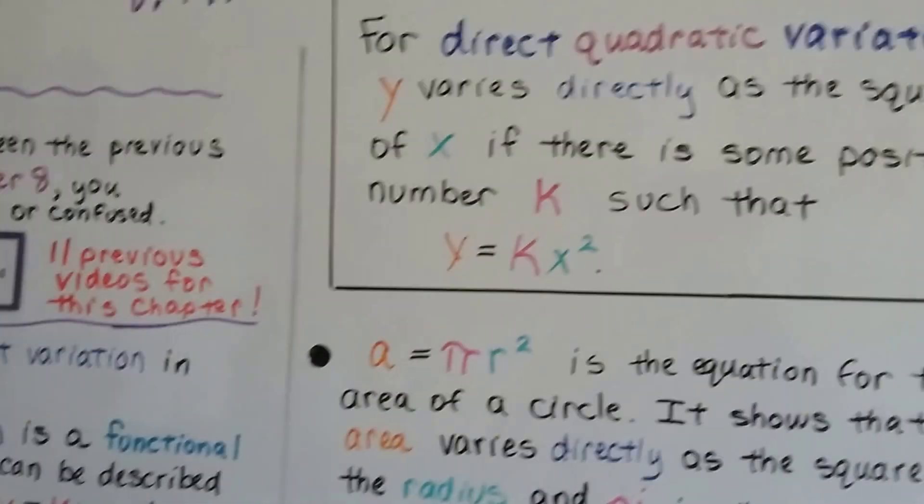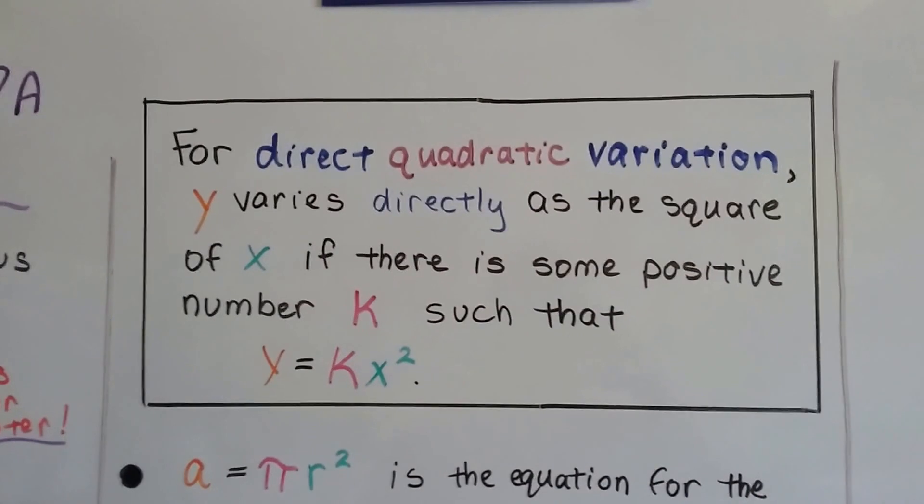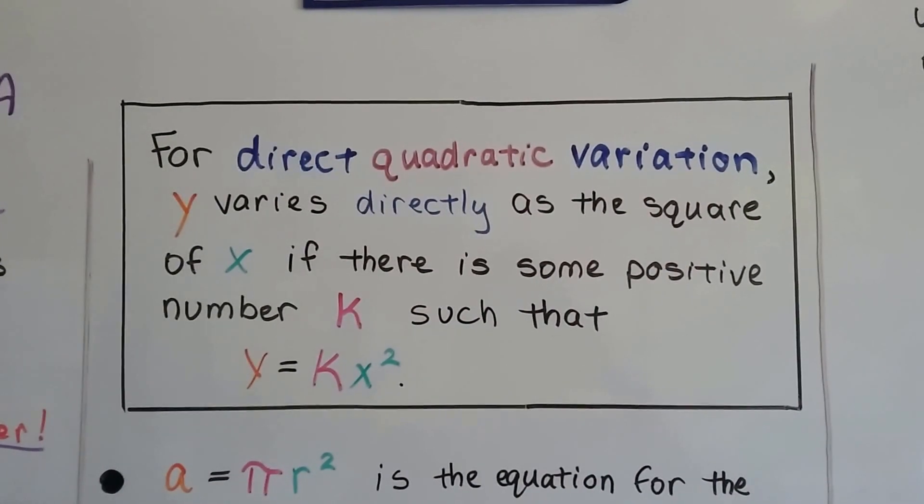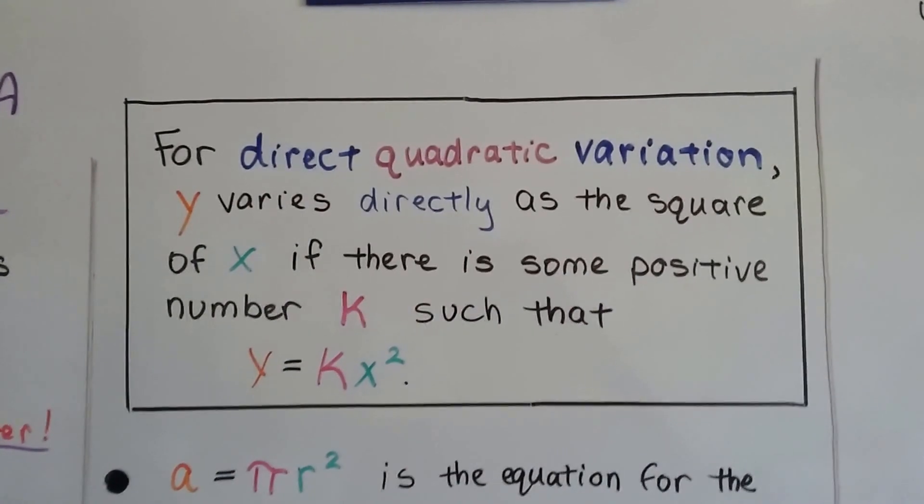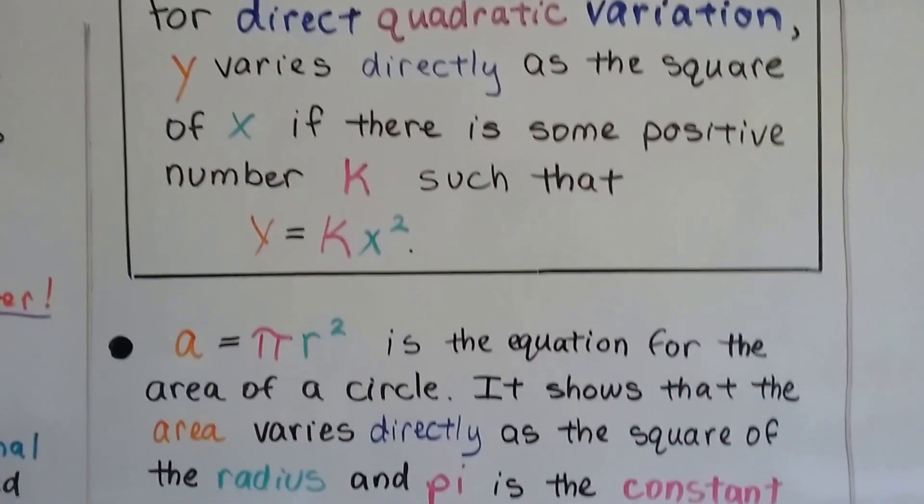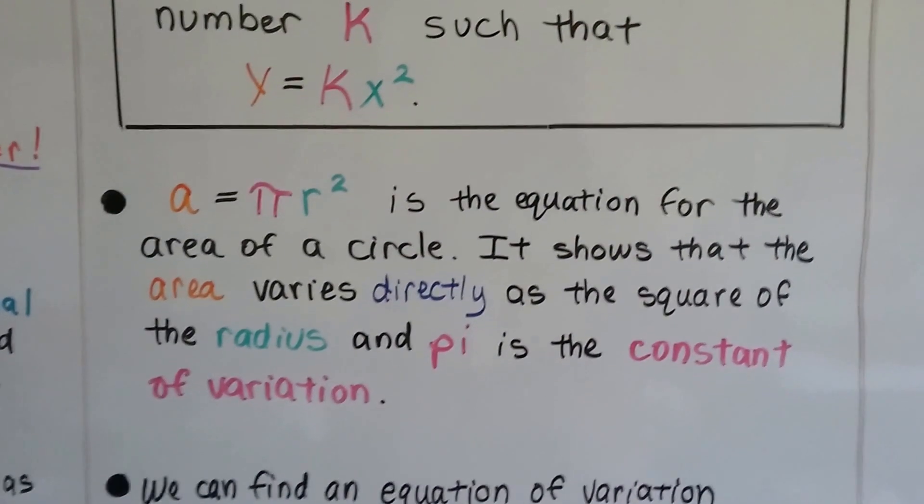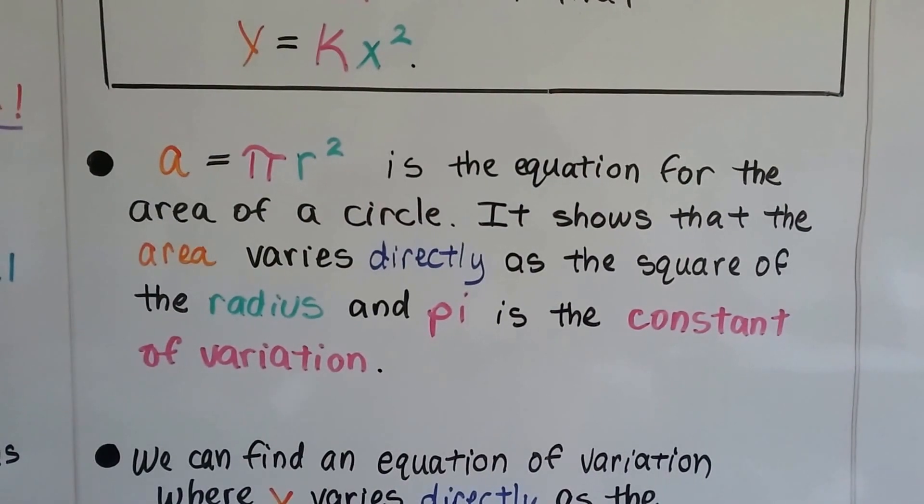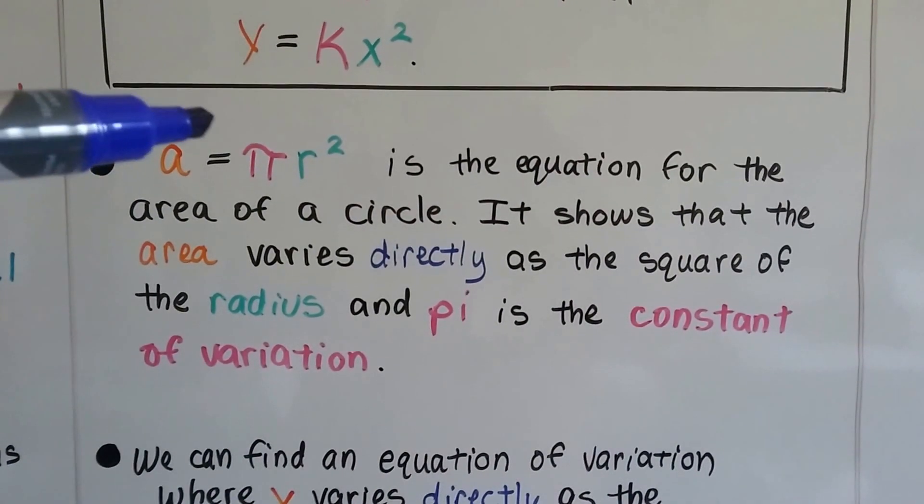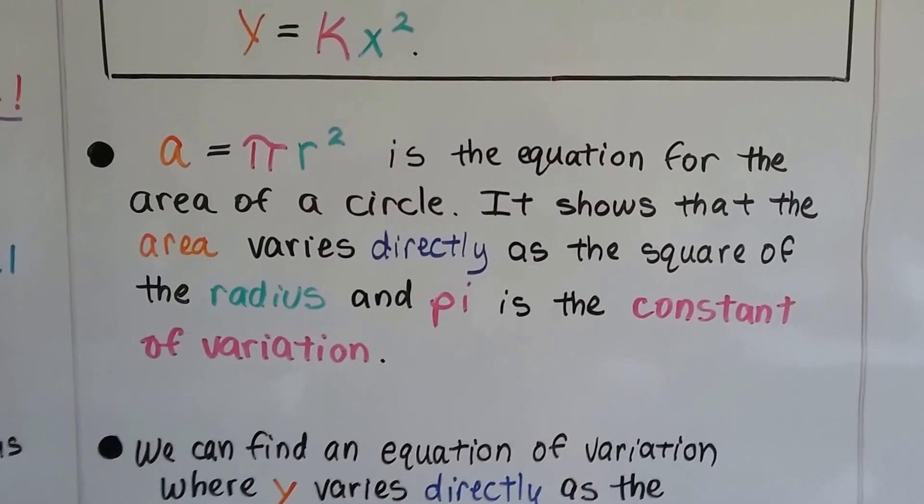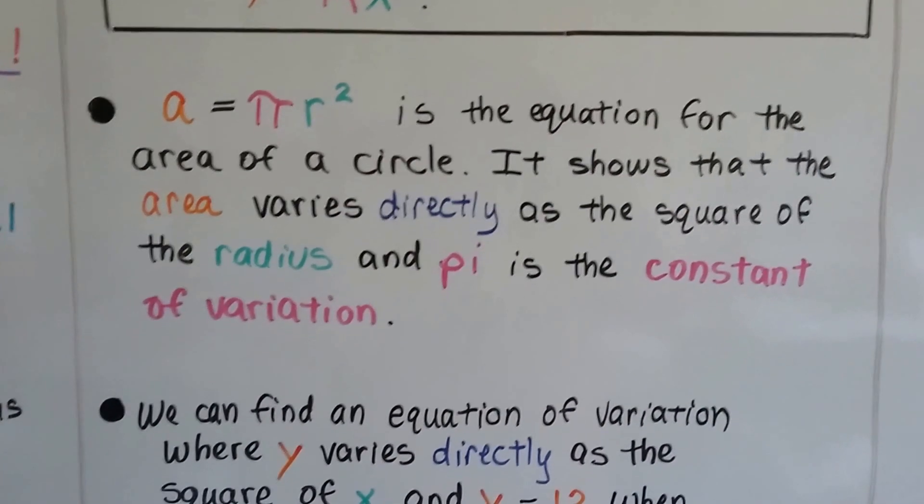So for direct quadratic variation, the x is just squared. y varies directly as the square of x if there's some positive non-zero number k, such that y equals kx squared. In this equation, a equals pi r squared, this is the equation for the area of a circle. And it shows that the area varies directly as the square of the radius and the pi is constant. It's the constant of variation.